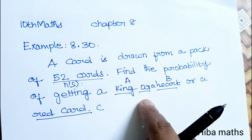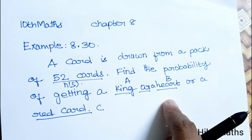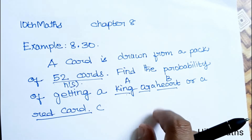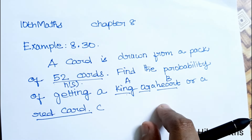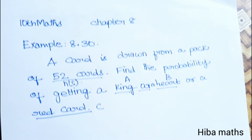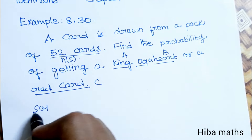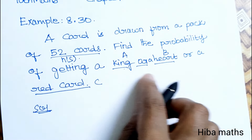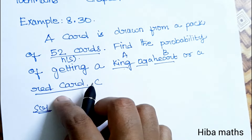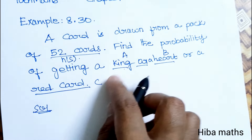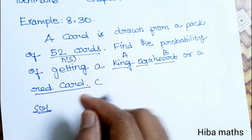We need to find P(A union B union C), where A is the event of getting a king, B is the event of getting a heart, and C is the event of getting a red card.